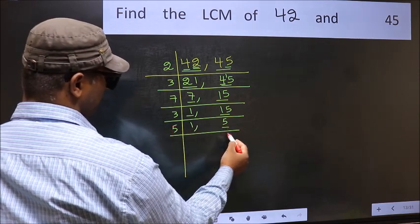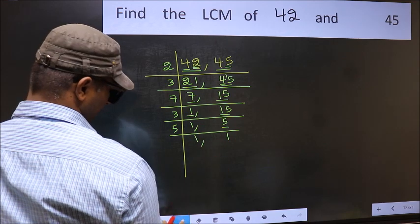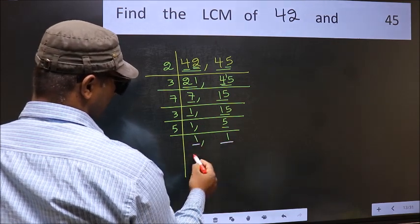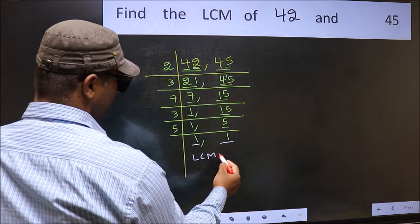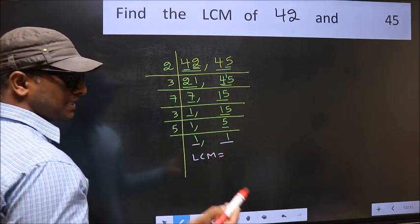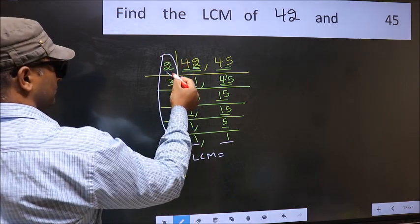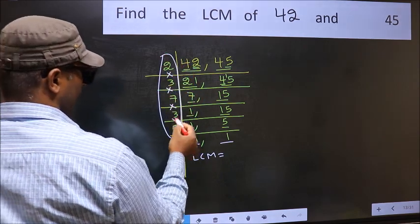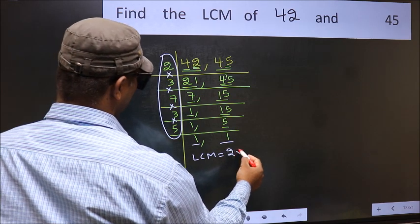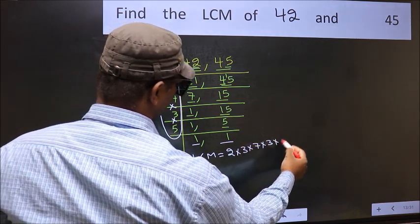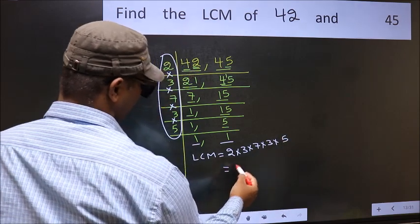We got 1 in both places. So our LCM is the product of these numbers: 2 times 3 times 7 times 3 times 5.